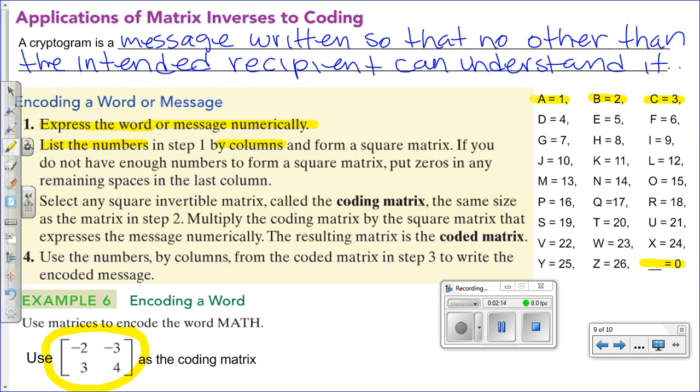It's not really necessary to form a square matrix. You can have any type of matrix. As long as it has the dimension so that it can be multiplied by this matrix that we're going to have here. You select any square invertible matrix. I prefer to stick to the two by twos, because those are very easy to find the inverse of.